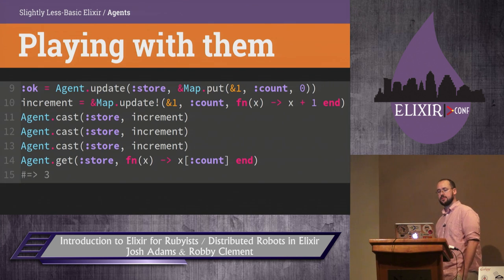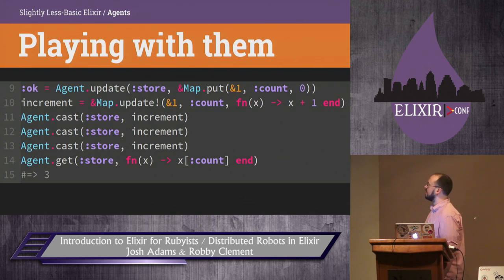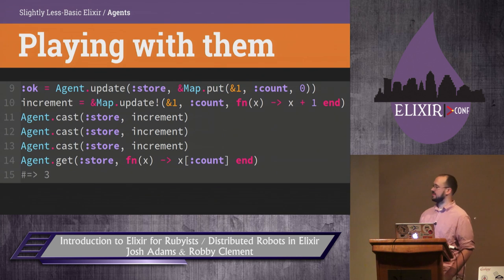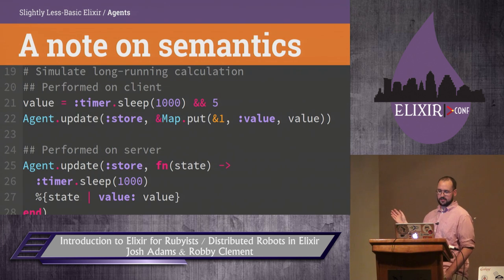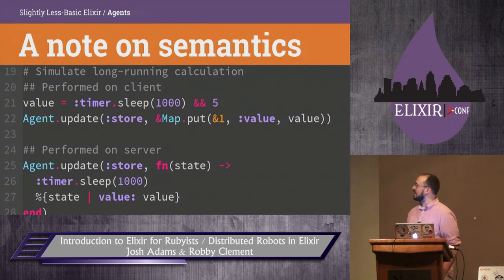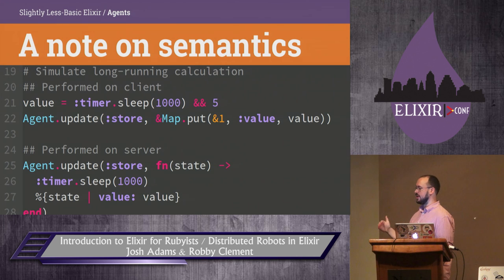Agents also support casts for asynchronous operations. We could increment a counter the same way we did before and it just works. Since these are casts, the client doesn't wait until the operation is finished to return — that part happens in the agent process. It's important when dealing with agents to keep in mind whether you're in the client or the server, because if you're blocking the server, other clients can't talk to it. In general, it's probably better to calculate new values on the client rather than the server.